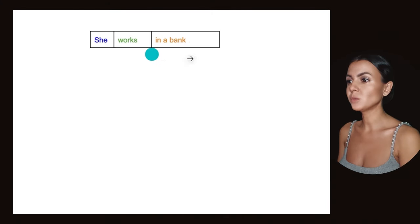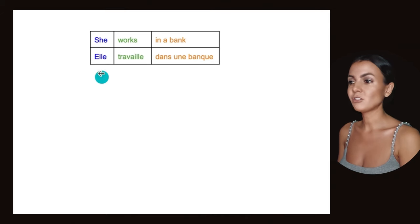Sentence number one: She works in a bank. Very simple sentence. In French, the same - same structure. Elle travaille dans une banque. Subject, verb, object.